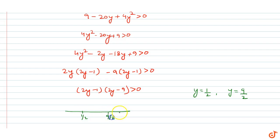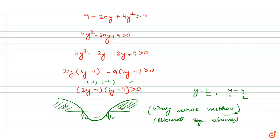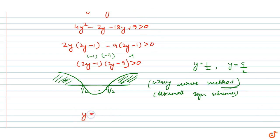Using the wavy curve method, we can find the range of y. According to this method, if we take a number smaller than 1/2, like 0, we get (-1)(-9) = +9, which is positive. By the alternating sign scheme, the signs alternate. Since we need greater than 0, we take the positive parts. Therefore, the range of y is: y ∈ (-∞, 1/2) ∪ (9/2, ∞). This is our solution.